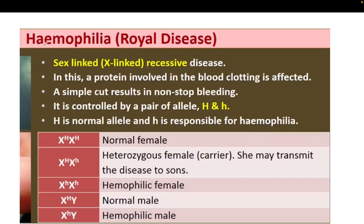Hemophilia is an example of a sex-linked recessive disease, also called the 'royal disease.' In hemophilia, the protein involved in blood clotting is absent, so blood doesn't clot and a simple cut results in non-stop bleeding. It is controlled by a pair of alleles — capital H (dominant, normal) and small h (recessive, hemophilia).